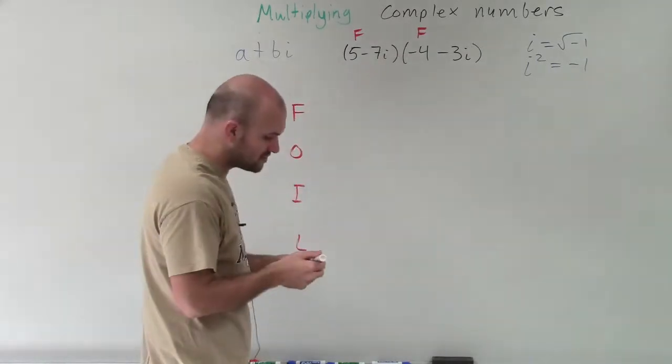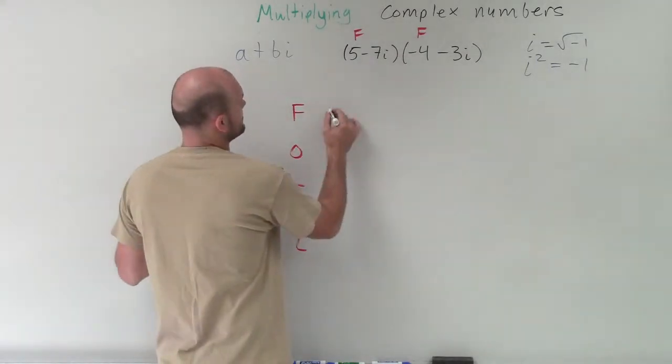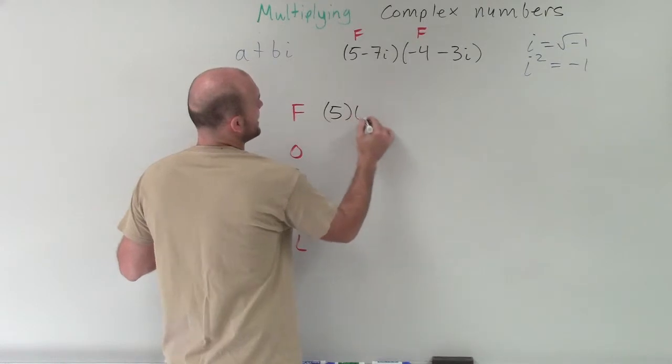So we multiply the first two terms of each of our binomials. So that's going to be 5 times negative 4.